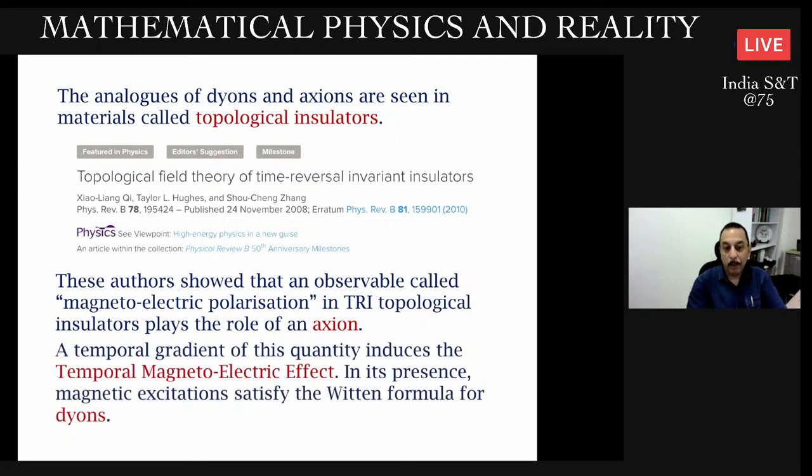We call it surface states - the material has one way of conducting electricity in its bulk and another way on the boundary. There are many fascinating features. One of interest to us is that certain kinds of insulators called time-reversal invariant insulators, the analogues of dions that Witten discussed and axions that Wilczek discussed are seen in these materials.